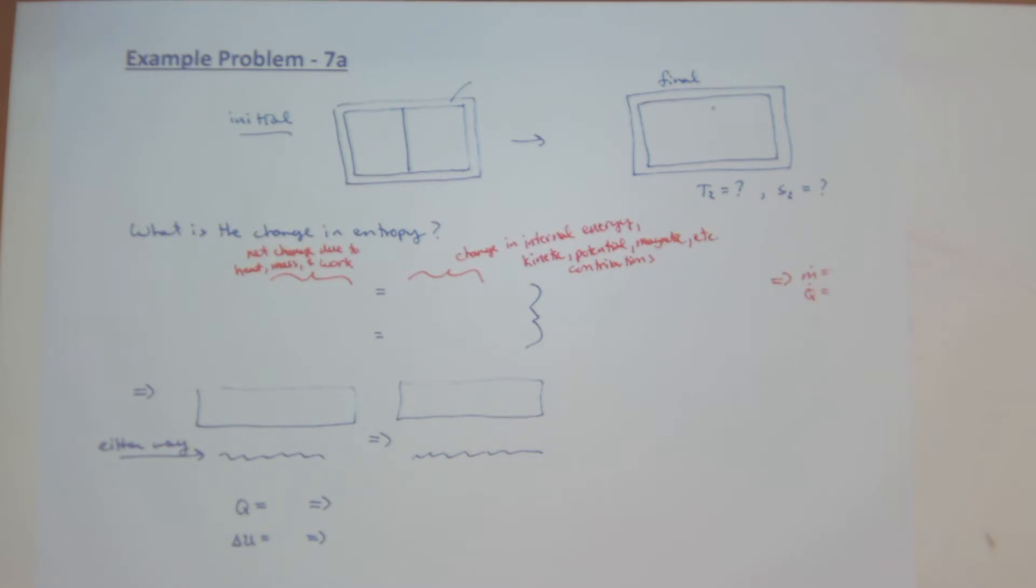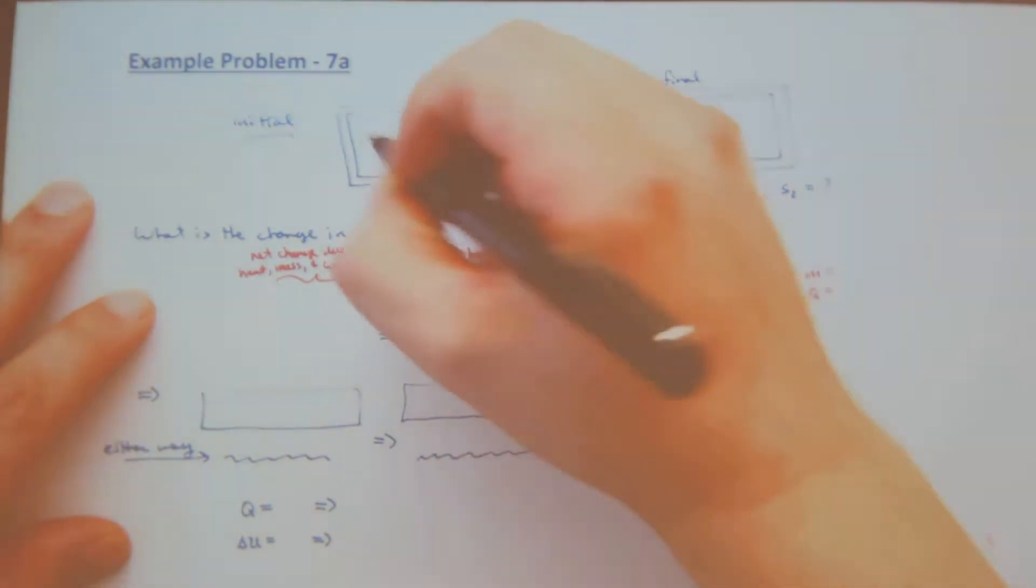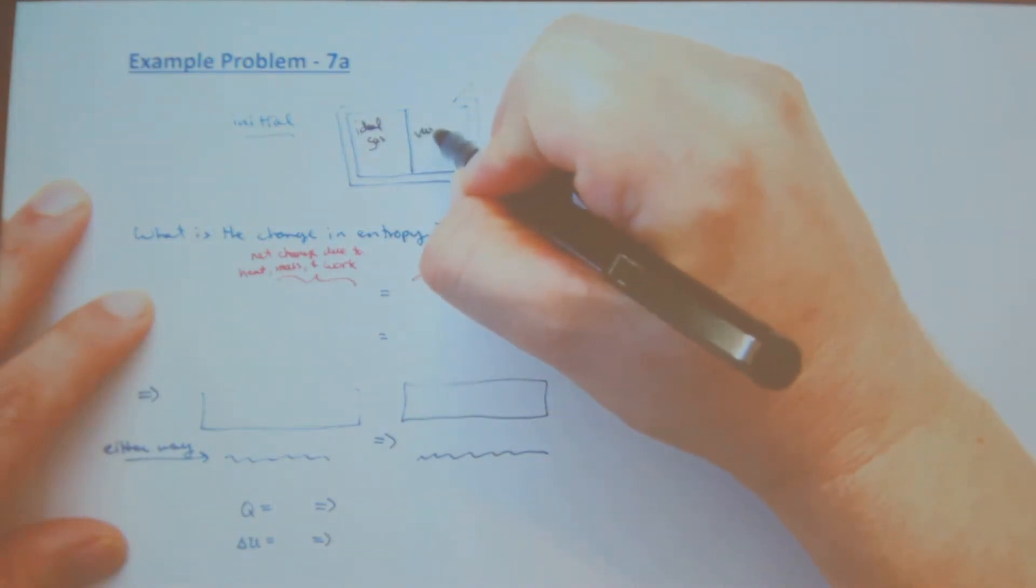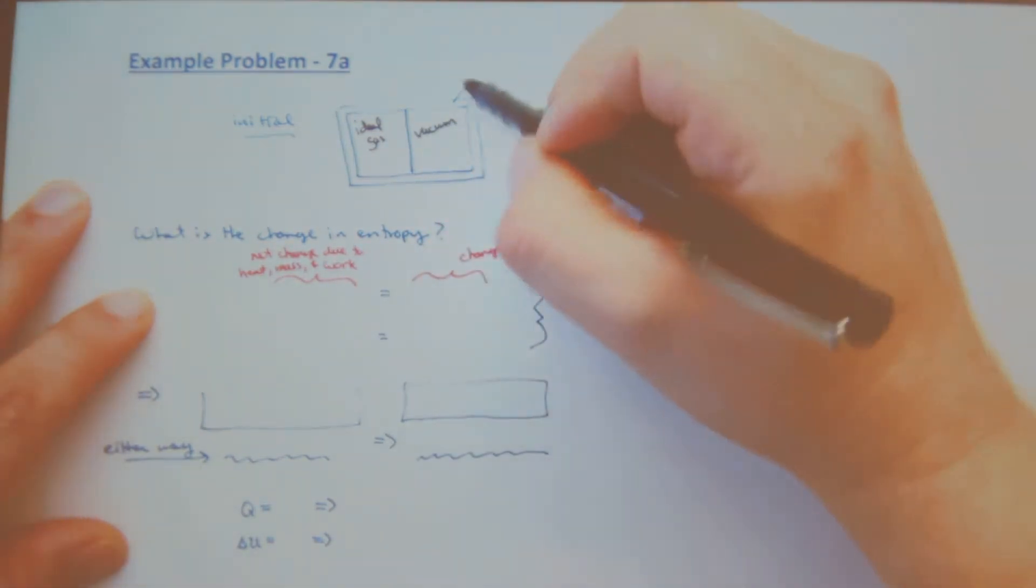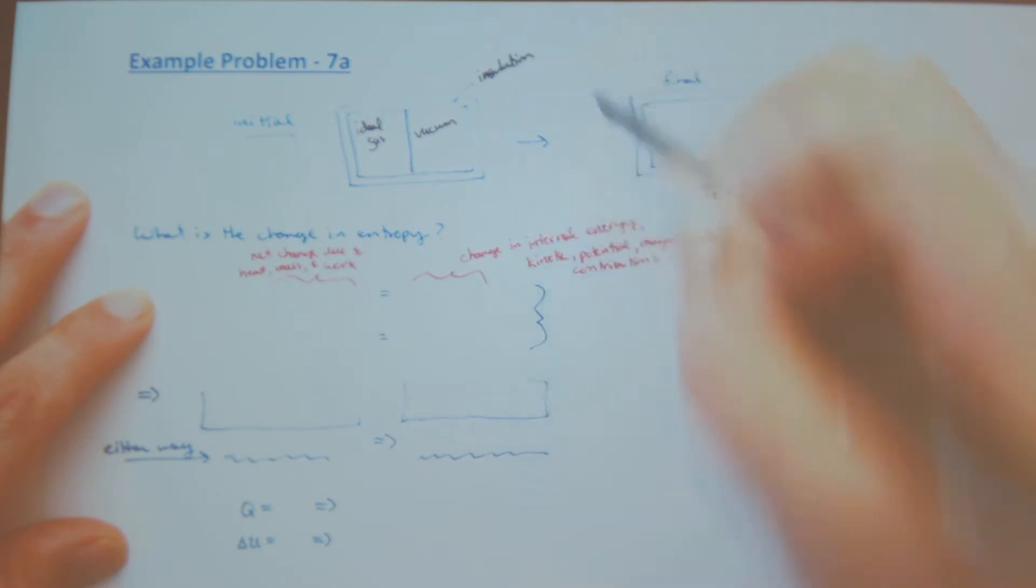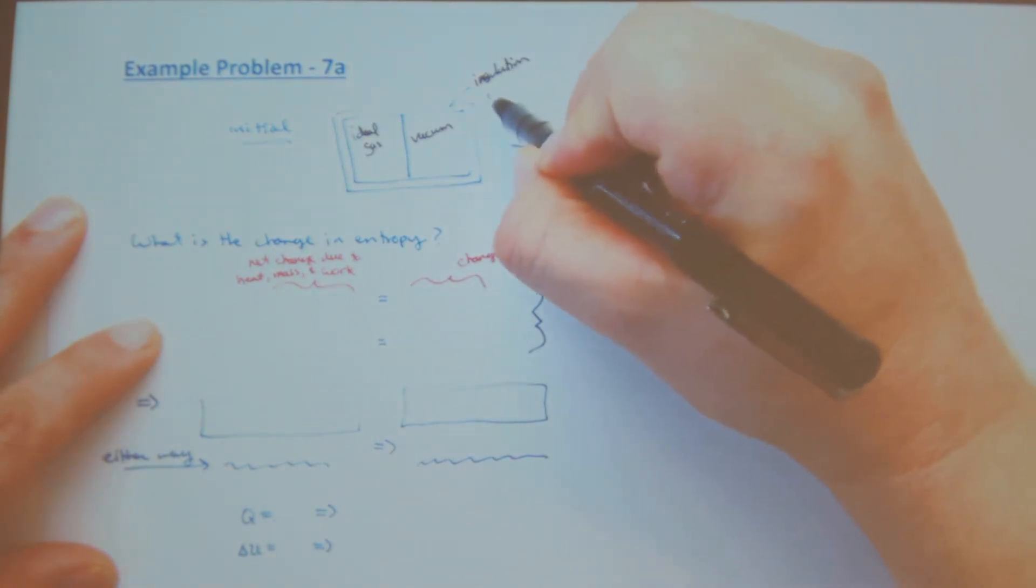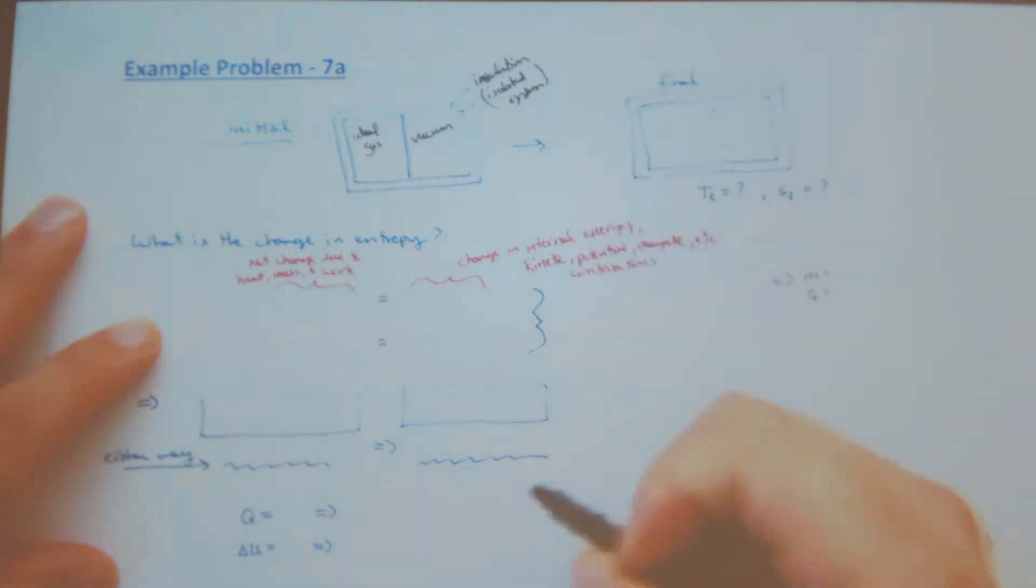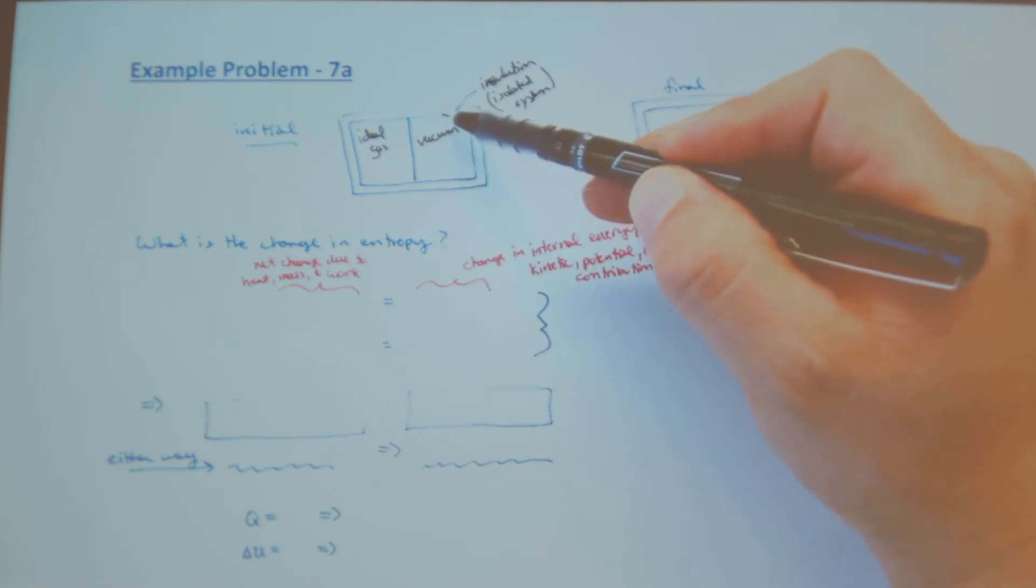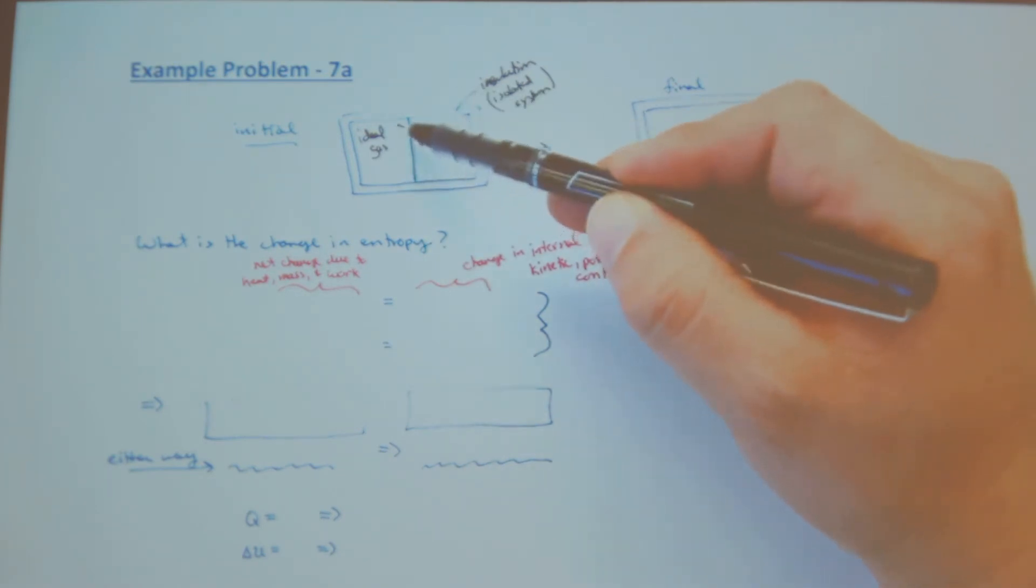In this example problem, initially I have an ideal gas here, and on this side I have a vacuum. It's insulated, so there's insulation here. We can consider this an isolated system - isolated because my insulation is so good that no heat can cross this boundary and there's no leakage of gas through mine.